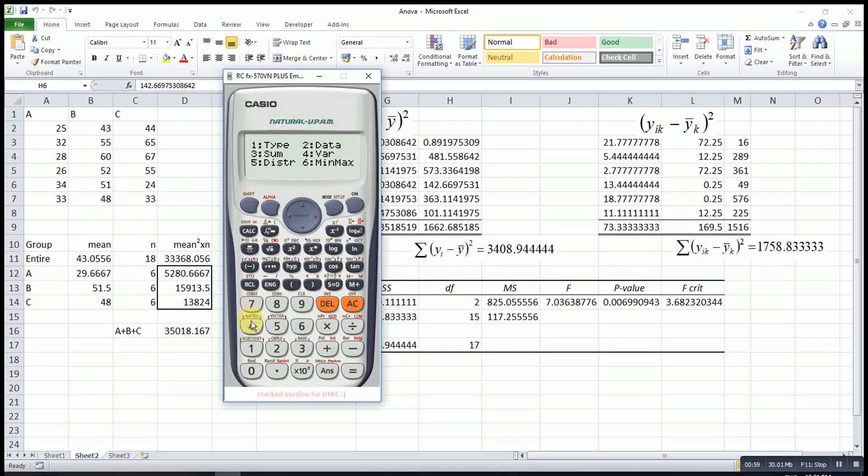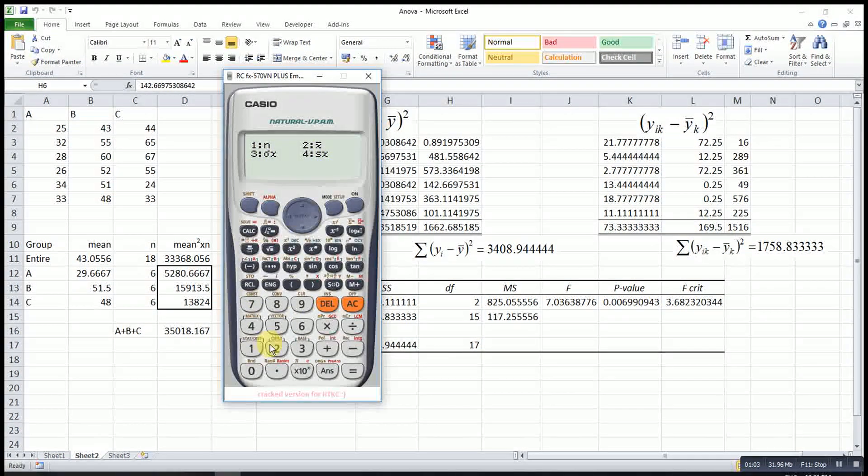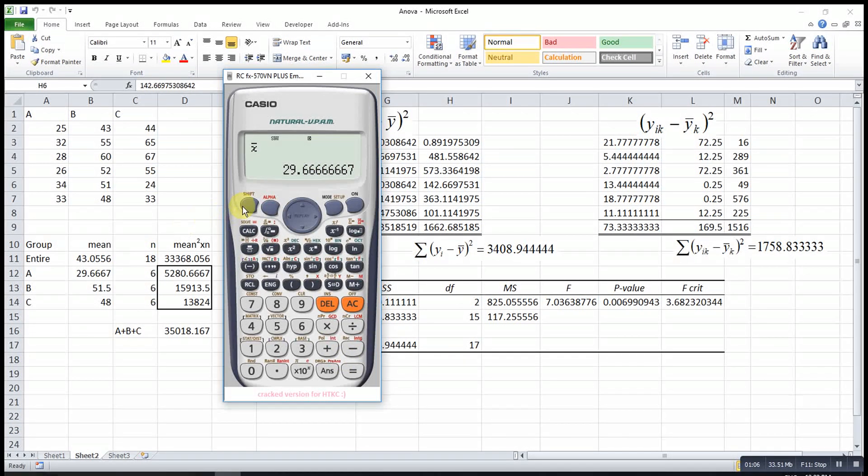Then shift 1, look for variation 4. If we want the mean value, we choose 2, then equals. This will be the mean value.